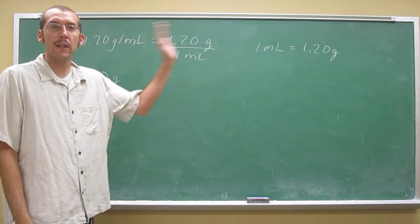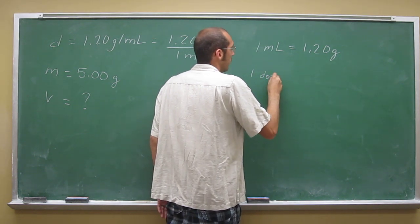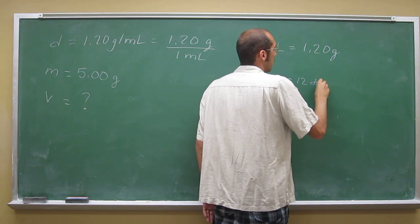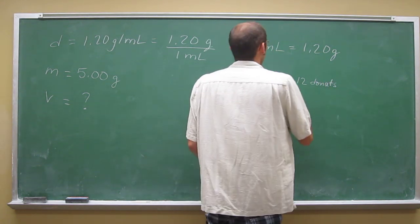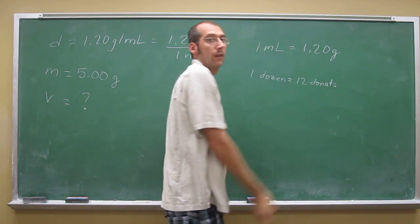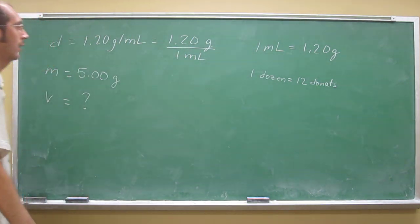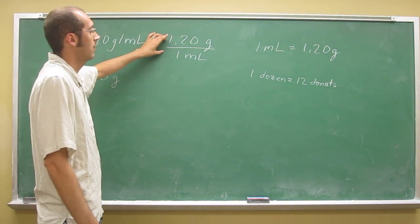So just like what we did before, right, 1 dozen, if you will, if you remember this example, equals 12 donuts. We use that as a conversion factor. So we can use this as a conversion factor, too, and that's the cool thing about doing things this way, and in chemistry, you'll find a lot of these things.